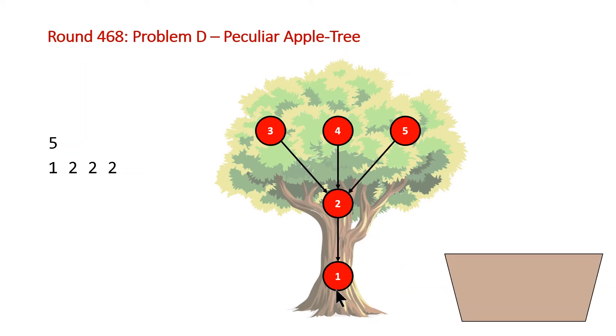So immediately Arcady can put apple number one in our bucket and then from there each one of the apples at the levels above is going to drop down to the inflorescence that it's next connected to. So that's going to look like the following, the two drops down to the base and then the three, the four and the five are where previously inflorescence number two was.